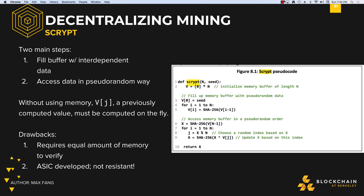Scrypt has two main steps. First, we fill a buffer with interdependent data, and then access the data in a pseudo-random way. To see why this is memory-bound, let's take a look at what happens when you fill a buffer with non-interdependent data. Looking something up is easy since you just find the index of the datum that you want.